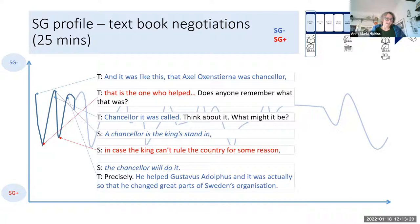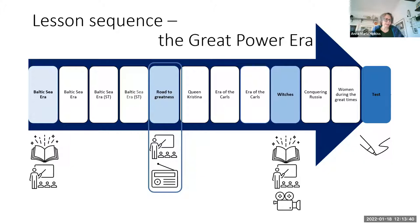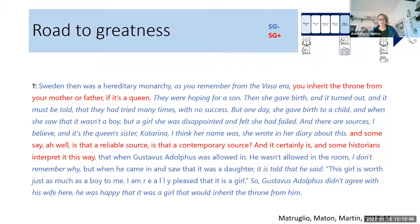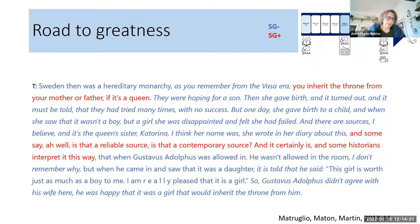The teacher further explains and adds information about what the chancellor did. Moving on to lesson five, with teacher-student interaction and a radio program, the text is shown with coloring and fonts — straight or italicized — and profiles are generated. In this extract, the teacher narrates a historical event instead of reading from the book, and there is movement between weaker and less weak semantic gravity.